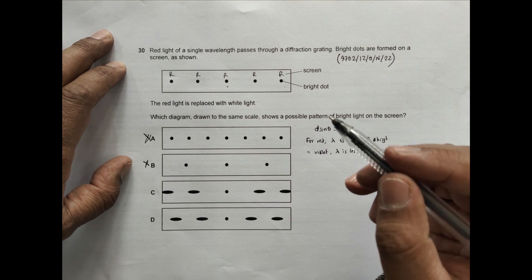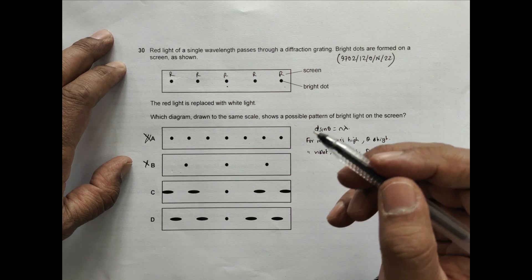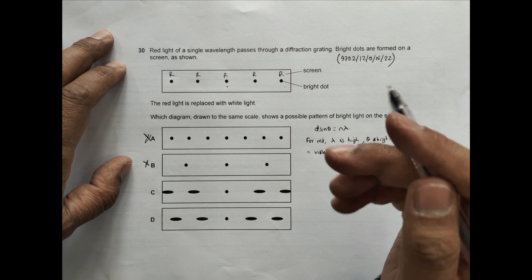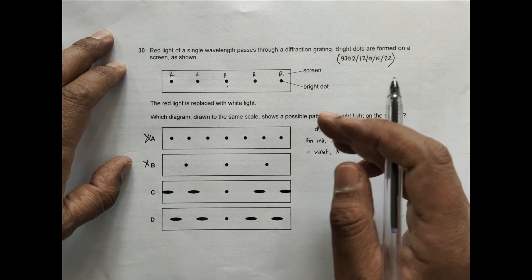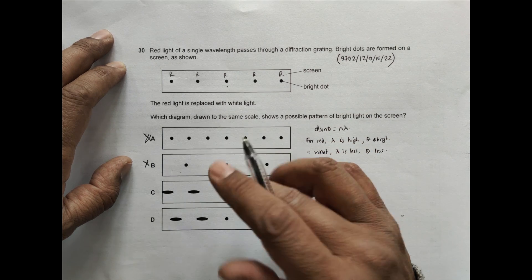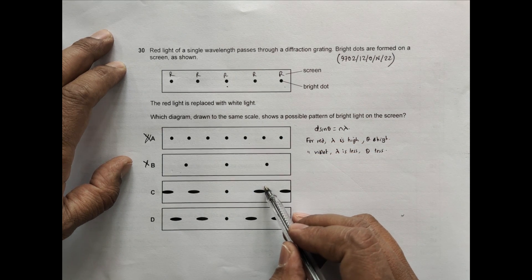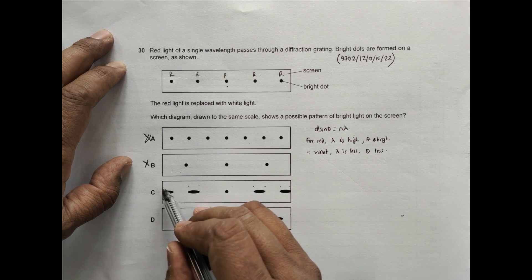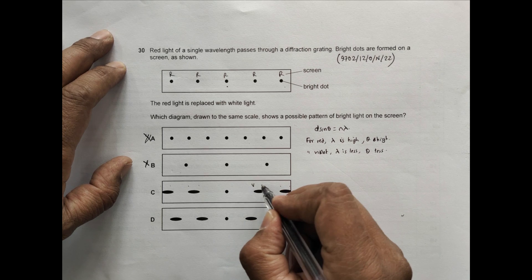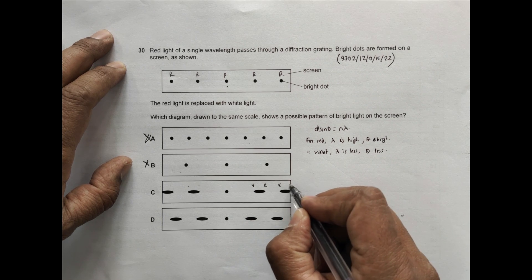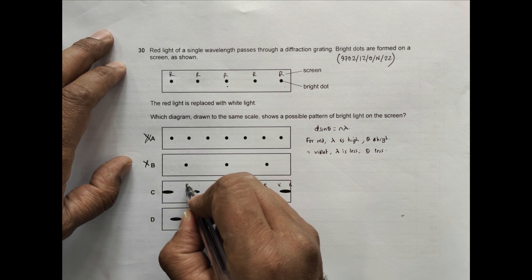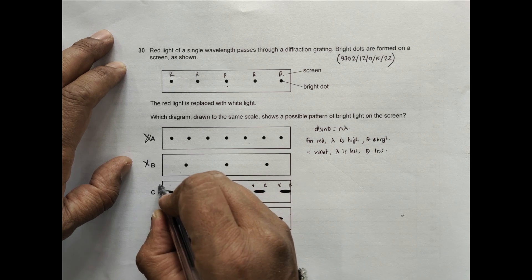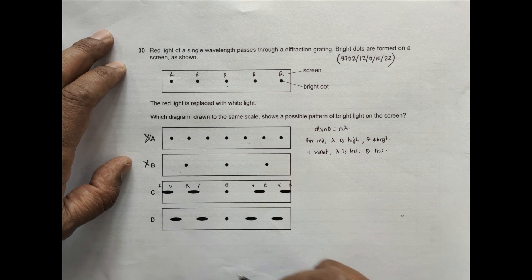Among these, red should be forming more displacement and violet should be forming less displacement. So we have more displacement, less, more, less, more, less. This would be violet, red, violet, red, violet, red, and this should be the central one.